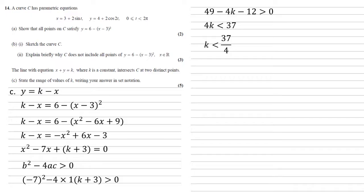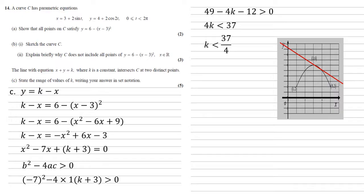Now the lower bound is a little trickier, but if we look at our graph, we've already seen that y is equal to k minus x for our straight line, which means it must be a straight line with a gradient of minus 1. Now the maximum for k is 37 over 4, which is the bit shown in our diagram here, where it just touches the curve on the top right side.